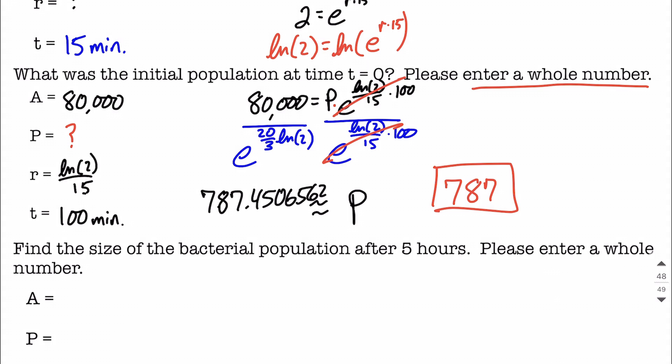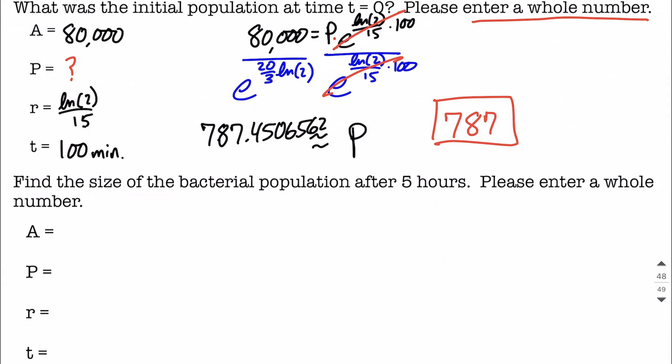But don't sleep on all those decimals that we just rounded off. Those decimals make a big, big difference when we answer this follow-up question. The follow-up question here, we want to know what's the size going to be of this bacteria population after five hours. So that after five hours, new value going in here for our time, we're going to use the same rate, the natural log of 2 divided by 15 that we found in the first part. Our initial population, we're going to keep all those decimals. So 787.4506562.